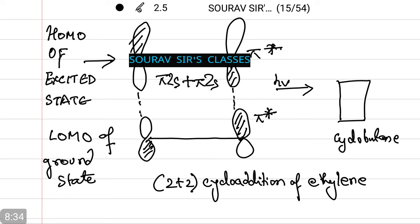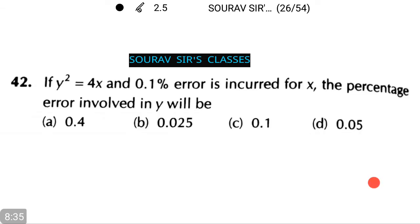Let's see another numerical question. Now moving on to the next question. If y² equals to 4x and 0.1 percent error is incurred for x, the percentage error involved in y will be among the following options. Let's see how to do this.